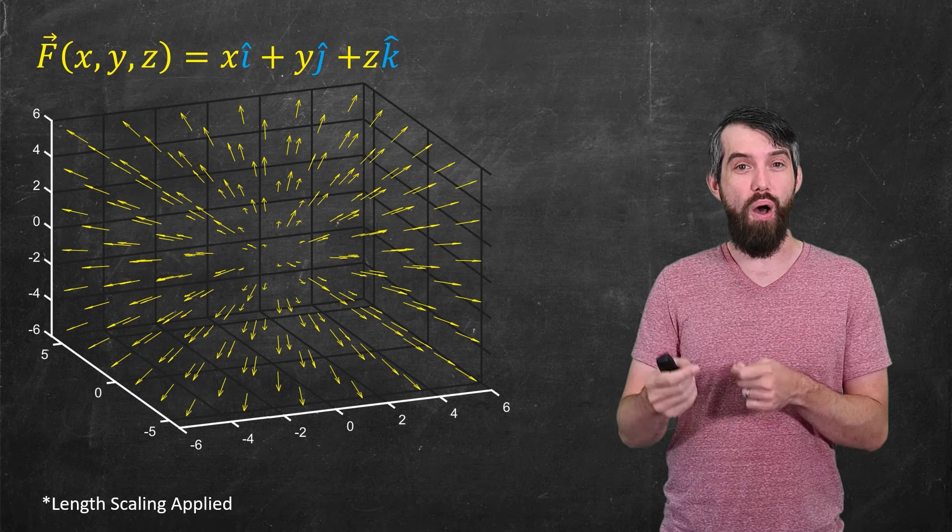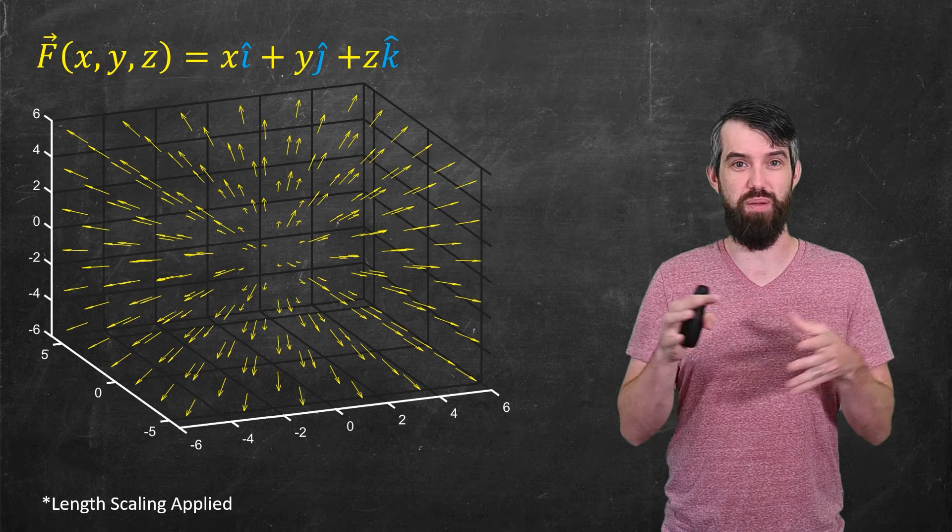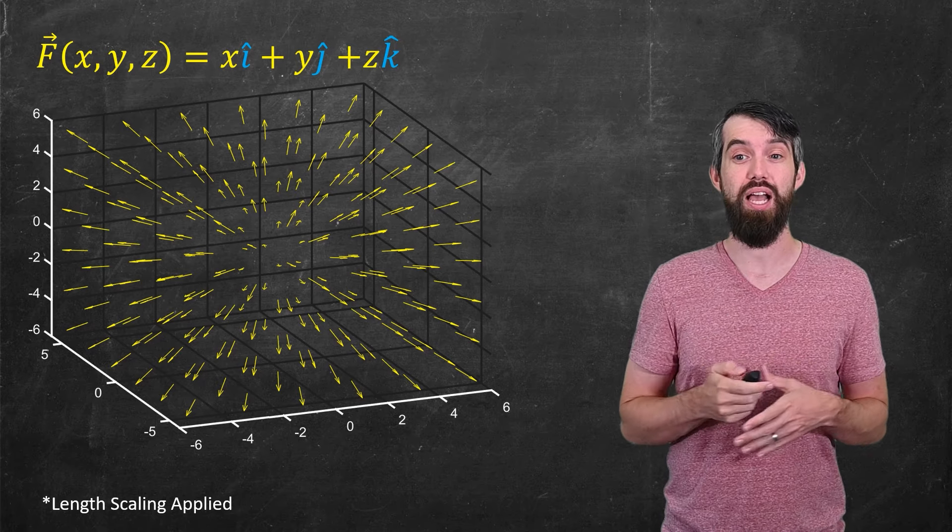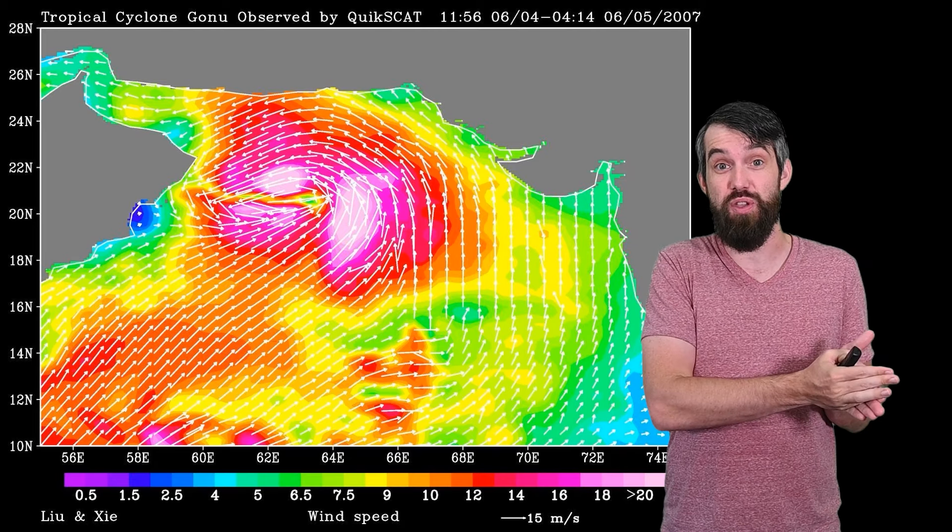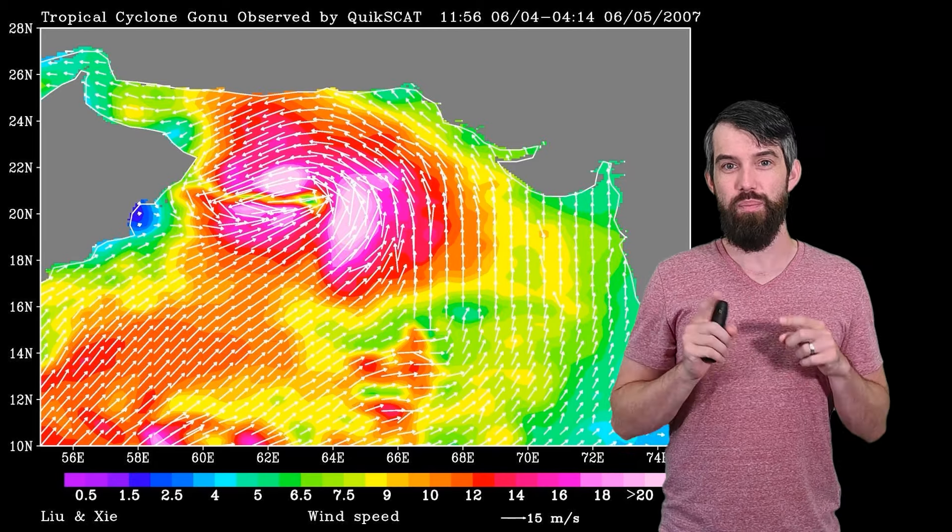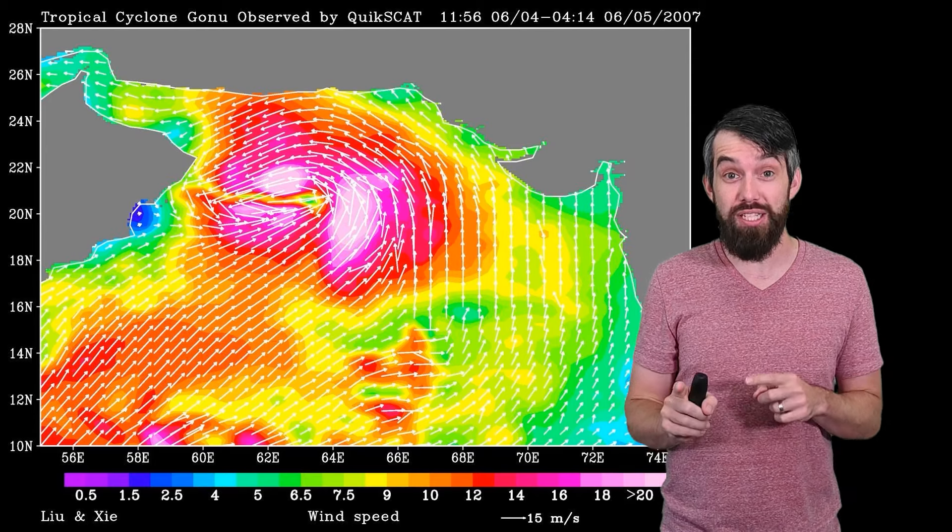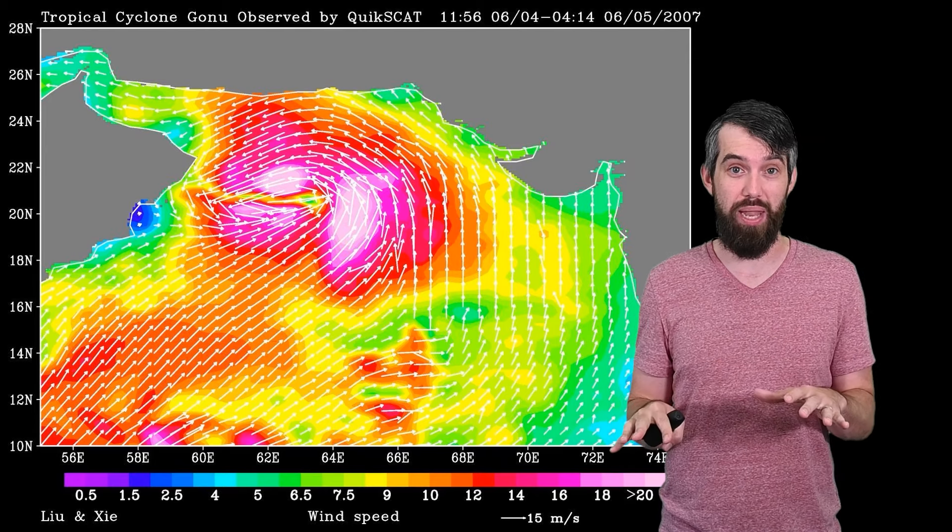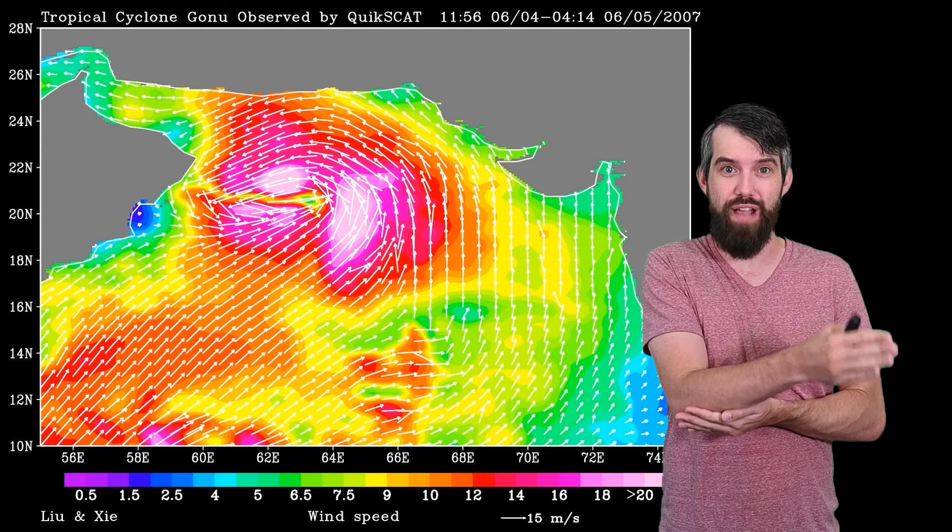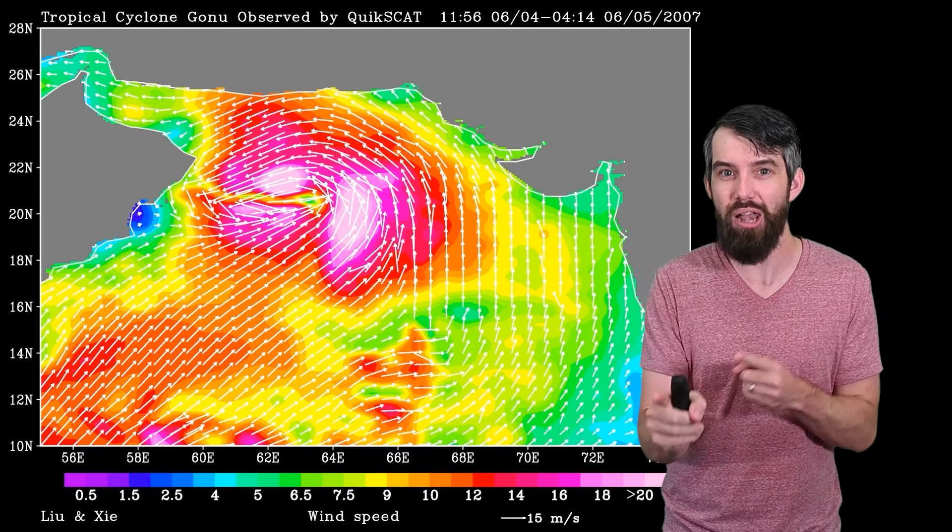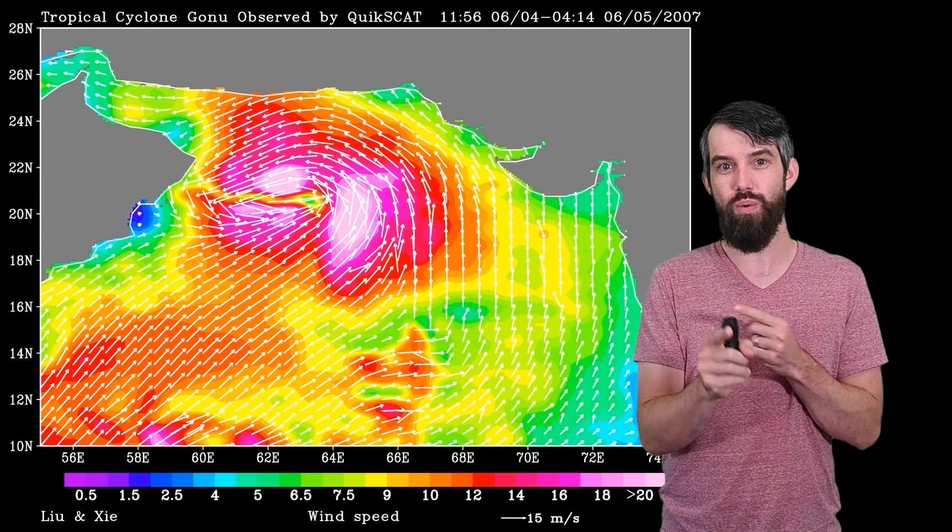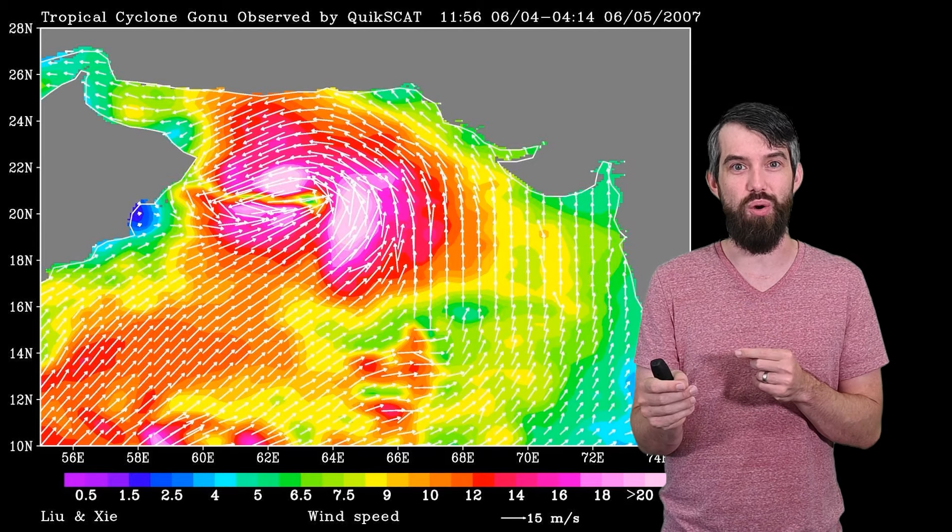Now, while we're on that theme of how you can play around with the computer graphics a little bit to plot these, I want to go back to that original wind speed vector field that we saw at the beginning of the video. Because notice it's not just the fact that at every point in the xy plane, there's some two-dimensional vector that tells you the magnitude and direction of the wind speed. There's also color in this plot. So what's going on with the color here?